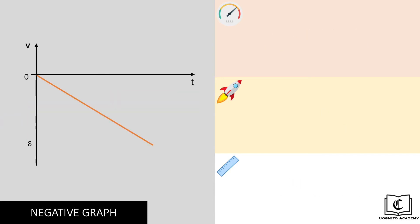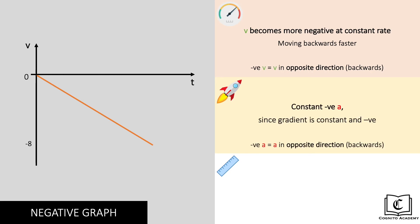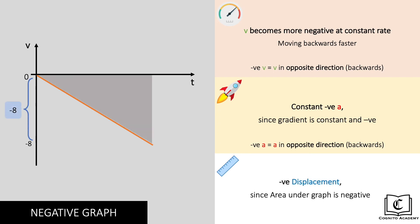Next up, in this graph, we can see that velocity here is getting more negative from 0 to negative 8 meters per second at a constant rate. What this means in layman terms is that the object is gaining speed as it is moving backwards. Looking at the gradient, since it is a straight line graph pointing down, acceleration is constant but negative, meaning acceleration is in the opposite direction — pointing towards the back. Displacement is also negative since the area under the graph is negative.